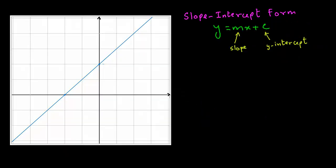One way of finding the equation of a line is to write it in slope-intercept form. This means if you know the slope or gradient of the line and also know where the line cuts the y-axis — at the point where x equals 0 and y equals c — then the equation of that line is y equals to the gradient m times x plus the y-intercept c, meaning where the line cuts the y-axis.